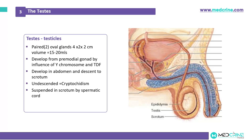In cases of undescended testicles, the condition is known as cryptorchidism. These testicles are usually suspended in the scrotum by the spermatic cord.